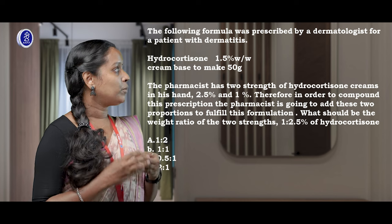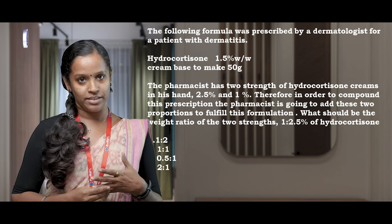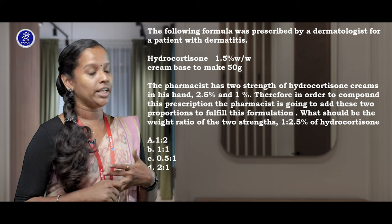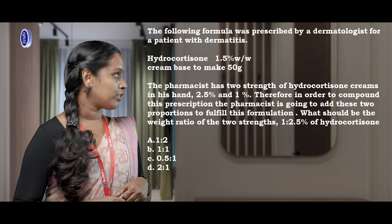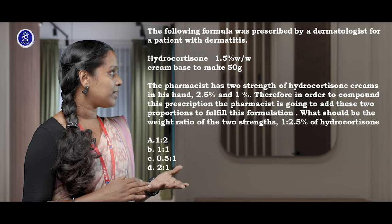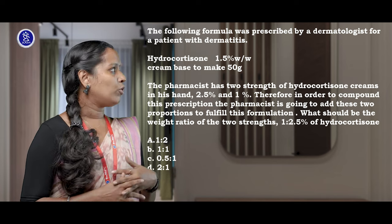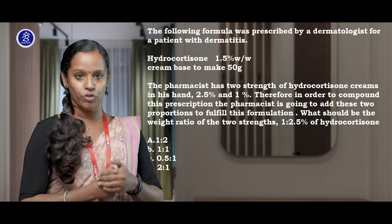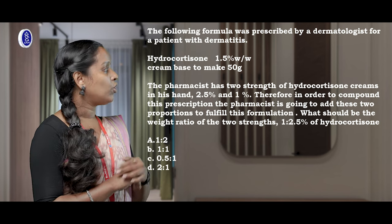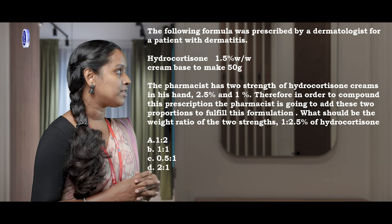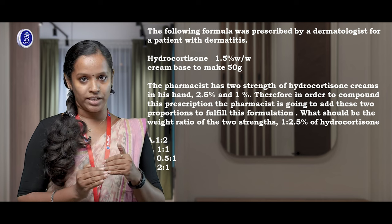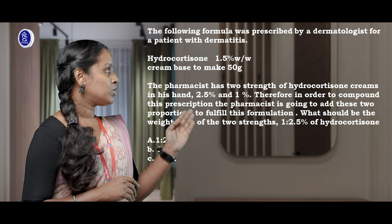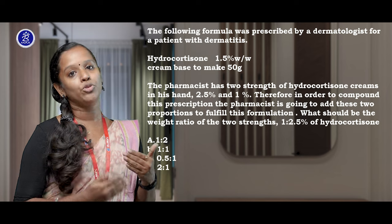A dermatologist prescribed for a patient with dermatitis: hydrocortisone 1.5% weight by weight cream base to make 50 grams. The pharmacist has two strengths of hydrocortisone cream: 2.5% and 1%. In order to compound this prescription, the pharmacist is going to add these two proportions to fulfill the formulation. What should be the weight ratio of the two strengths — 1% to 2.5% — of hydrocortisone? This type of question requires a formula called the allegation method.